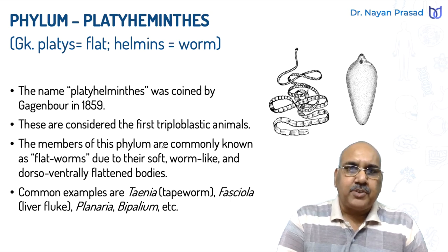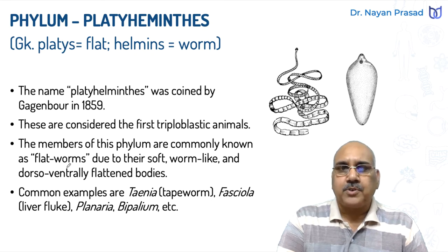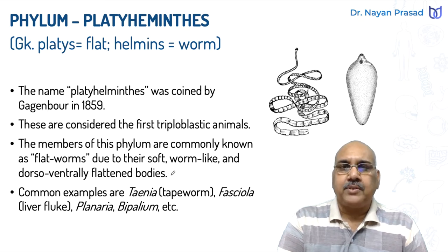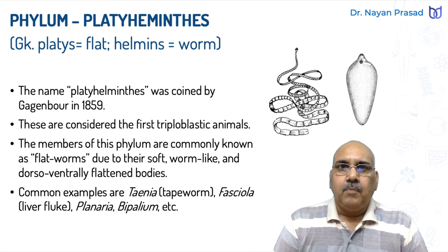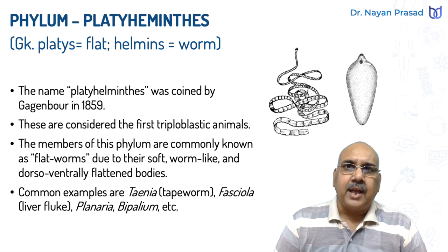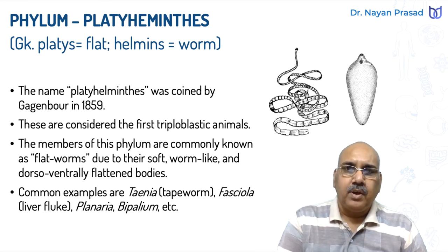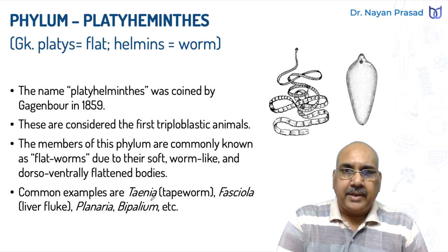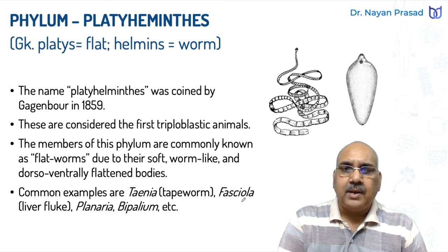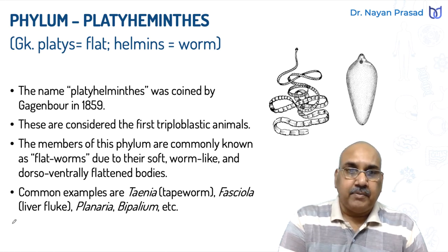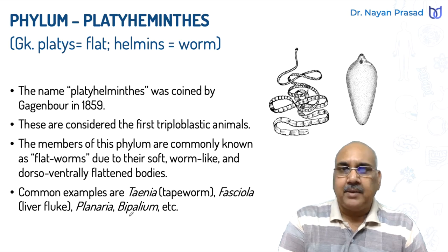The members of this phylum are commonly called flat worms due to their soft, worm-like, and dorsal-ventrally flattened bodies. The body is flat from dorsal and ventral sides. The common examples of this phylum include Taenia solium or tapeworm, Fasciola hepatica the liver fluke, planaria, bipalium, etc.